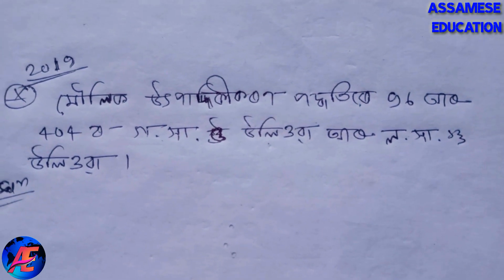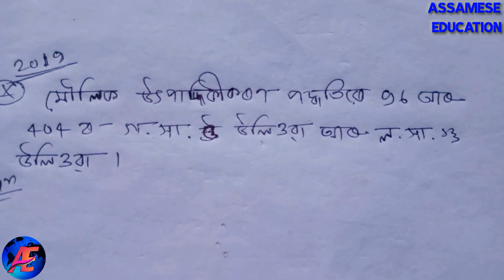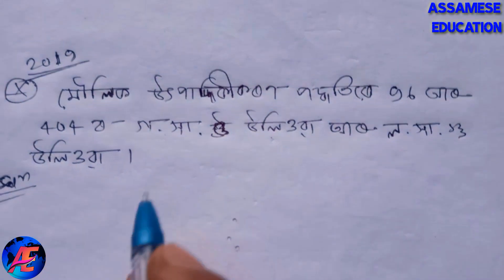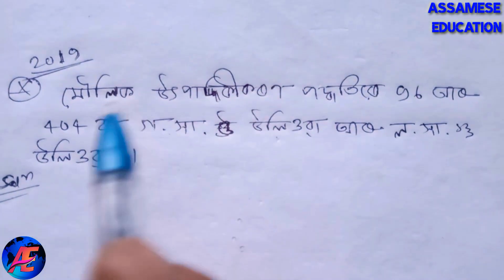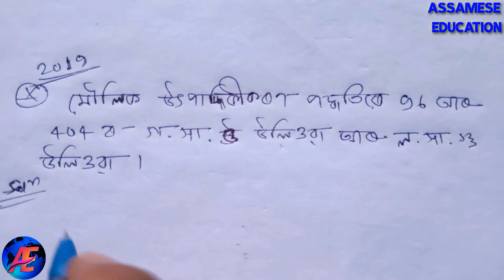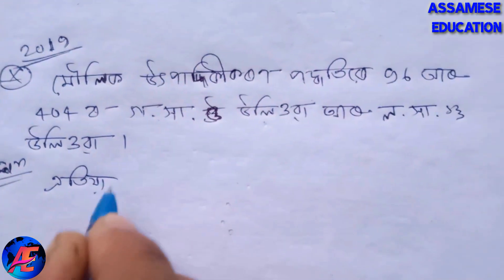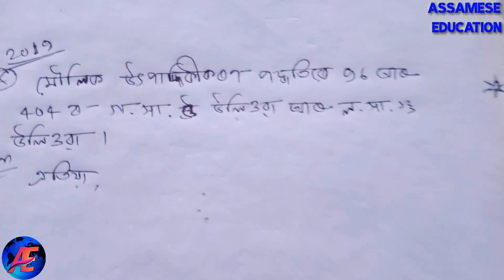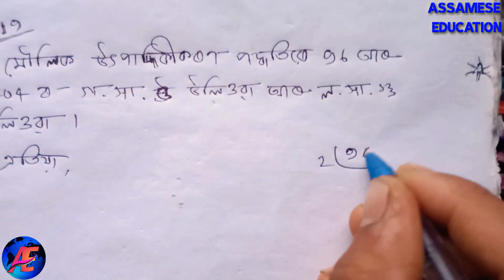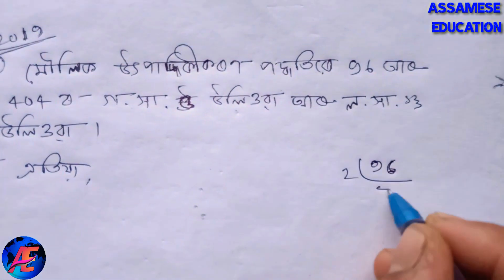The question is: if the numbers are 96 and 404, find their HCF and LCM. We can see that 96 and 404 are the given numbers, and we need to find the common factor. Let us factorize: 96 gives us 2, 8, 2, 8, and 6, 2, 8.